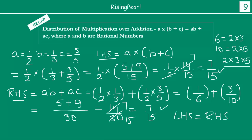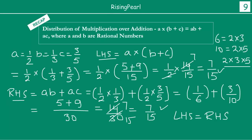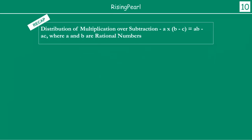Before we wrap up, let us look at our final property — the final operation on rational numbers. We are going to now do distribution of multiplication over subtraction. We just saw how to distribute multiplication over addition; now we will see how to distribute multiplication over subtraction. With the same three rational numbers A, B, C, it states: A times (B minus C) = AB minus AC. Using the same example: A = 1/2, B = 1/3, C = 3/5.